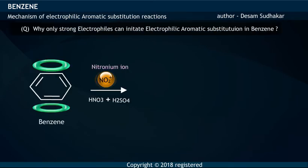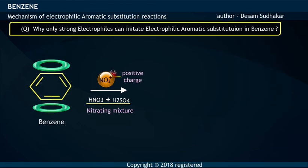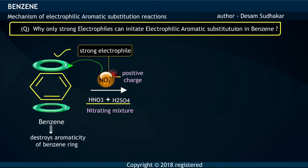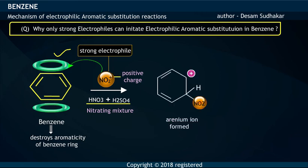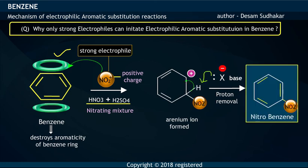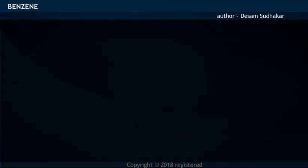Whereas the Nitronium Ion produced from the nitrating mixture, carrying a complete positive charge, acts as a strong electrophile and thus can destroy the aromaticity of the Benzene Ring to form the Arenium Ion, which on deprotonation with base forms Nitrobenzene.